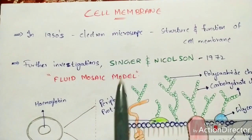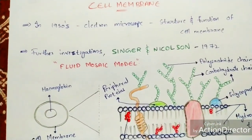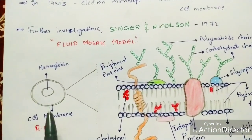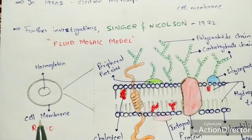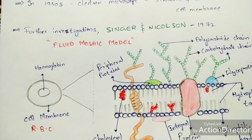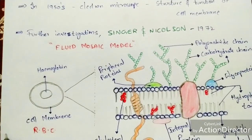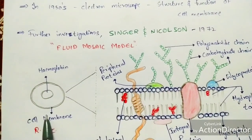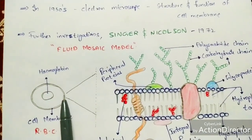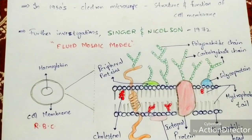Let us see what was discovered by Singer and Nicholson in their theory. To understand the cell membrane, first you need to know about the RBC cell, which is the best example for this explanation. RBC is nothing but red blood cell, which consists of hemoglobin. Hemoglobin mainly gives the red color to the cell. We are going to zoom into the cell membrane region of the red blood cell.